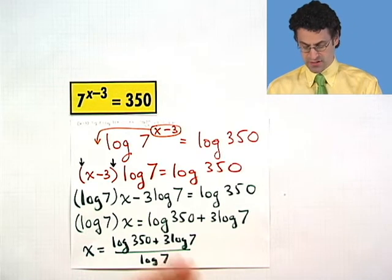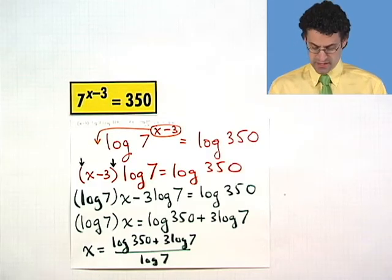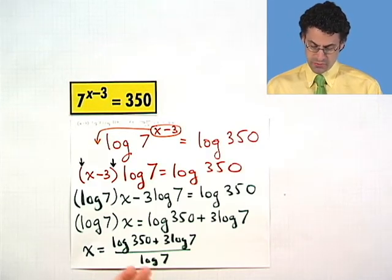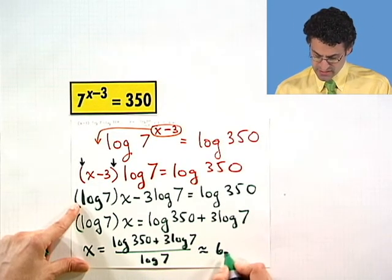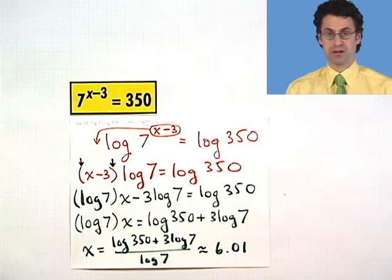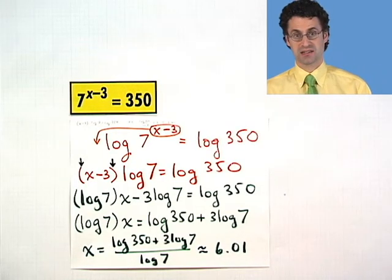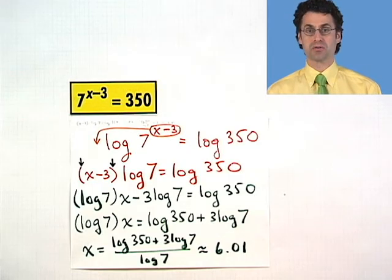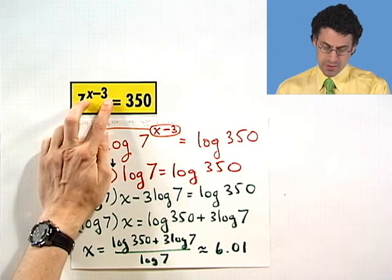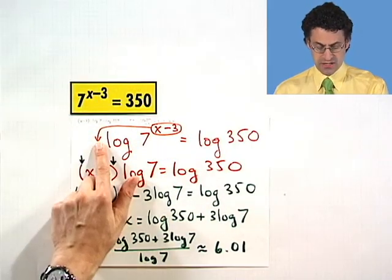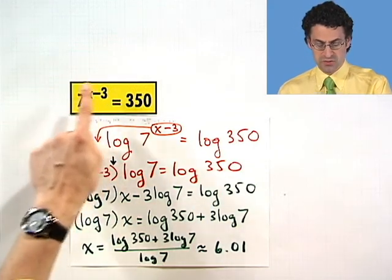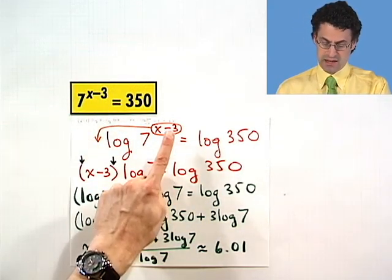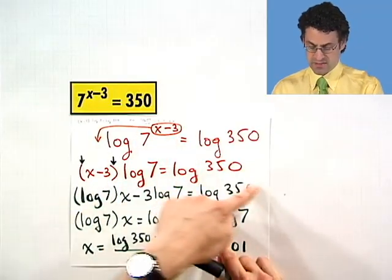So there's the answer. You can actually simplify this using properties of logs if you wanted to. Or if you want to get a numerical value you can just plug this into a calculator and we'd see this is approximately 6.01. And so x is a little bit bigger than 6. The important thing is the logarithm allows us to convert an exponent down to a coefficient. And why? Because the log is the inverse function of the exponential function. So it sort of undoes the complexity of the exponent and turns it into something that's on the same playing field with all the other numbers.